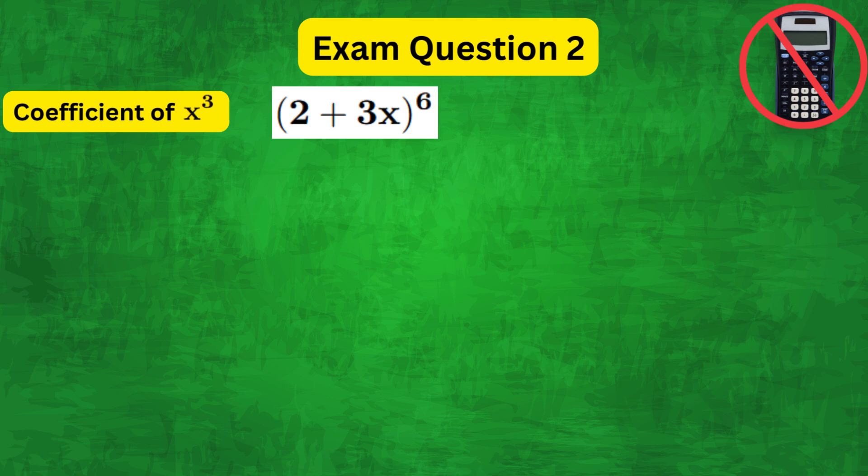In this case a equals 2, b equals 3x, and n equals 6.